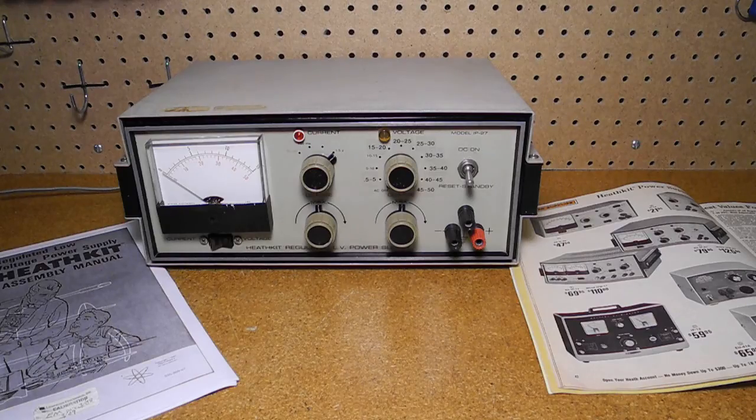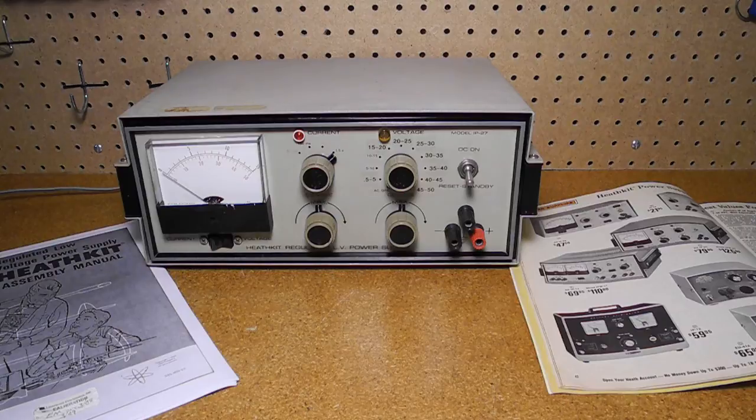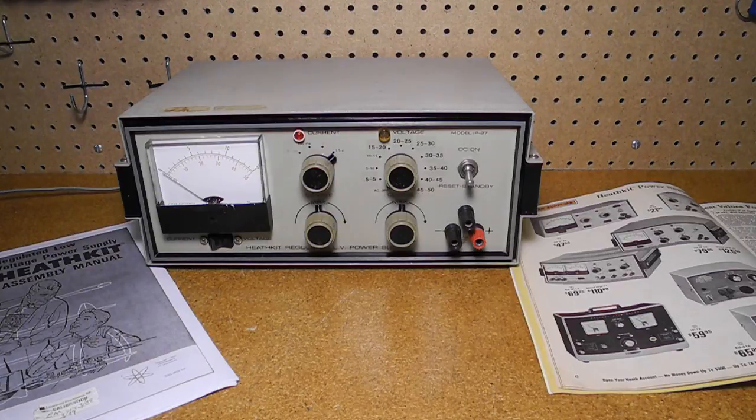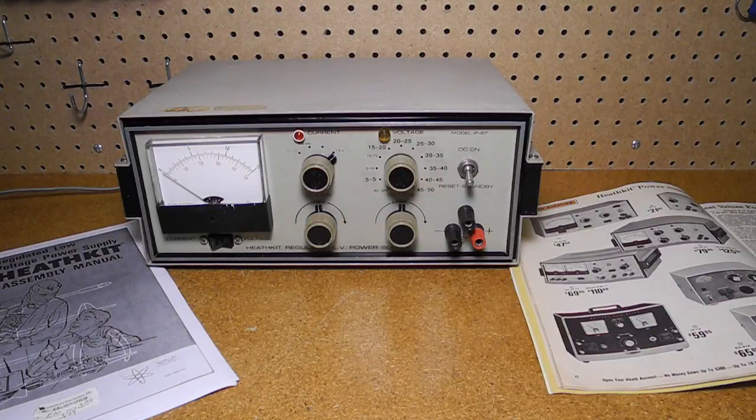The power supply uses germanium transistors, which may be difficult to find replacements for. In summary, the IP27 was Heathkit's high-end, low-voltage power supply, and undoubtedly many of them were sold over the eight years that the product was offered.